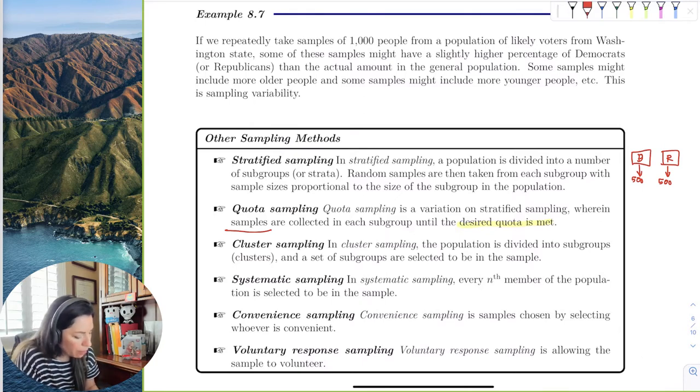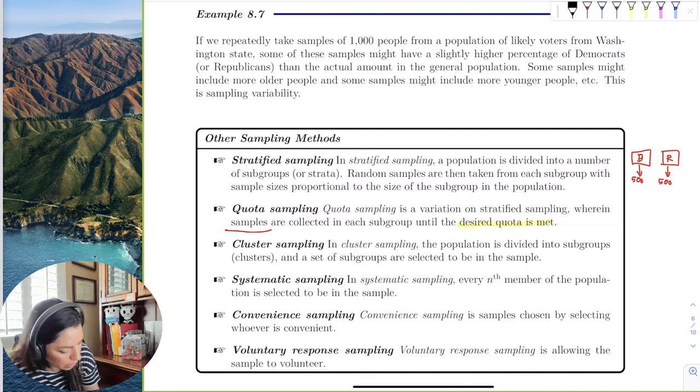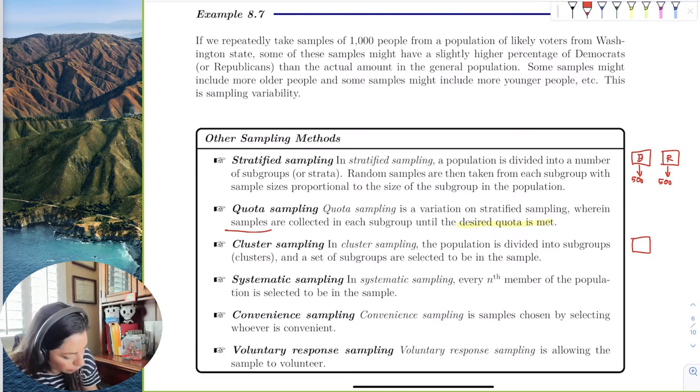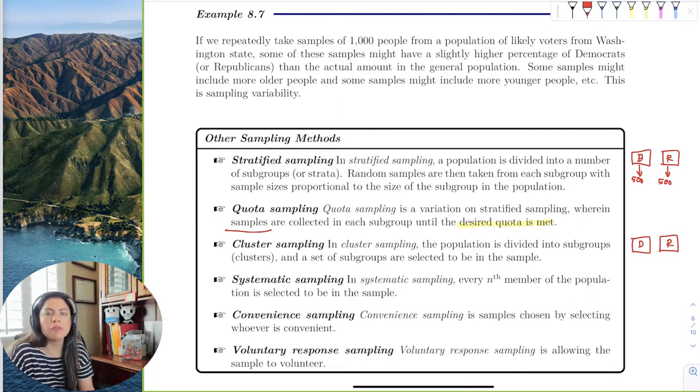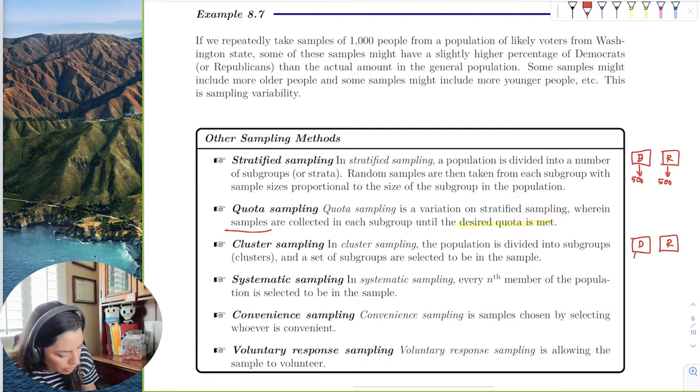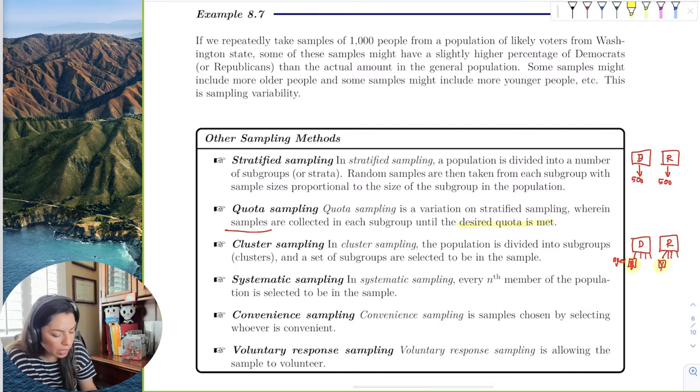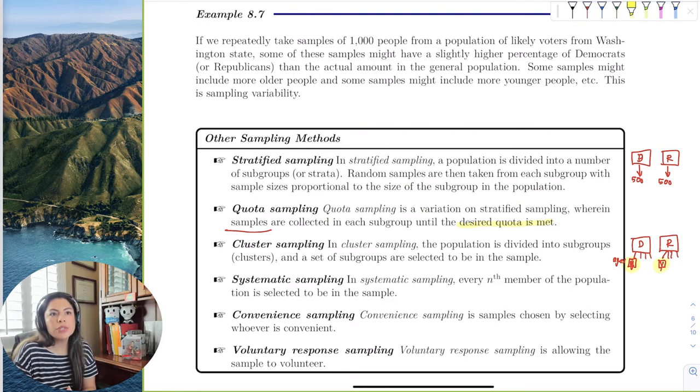Cluster sampling is the population divided into subgroups and a set of subgroups are selected. So now what you're saying is, let's see here, you have subgroups, let's say Democrat, Republicans, and then here you're like, you know what, I just want to assess the youth, the young, the young voters, 18 to 21. And so you have all these age groups, these ages, and then you have, I'll put Y for young, and same with Republicans, right, a lot of ages, but here's the young, the youth, and you sample the entire age, the entire group. So cluster sampling means that you're taking the entire group of your subgroup.